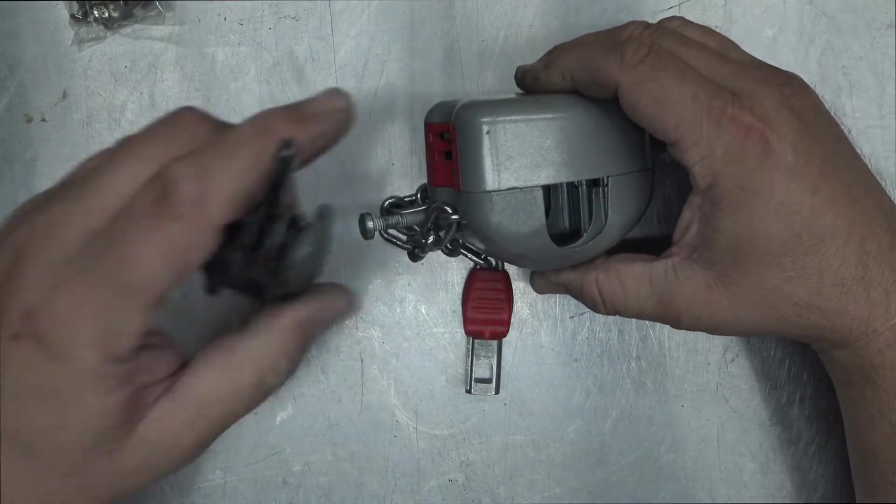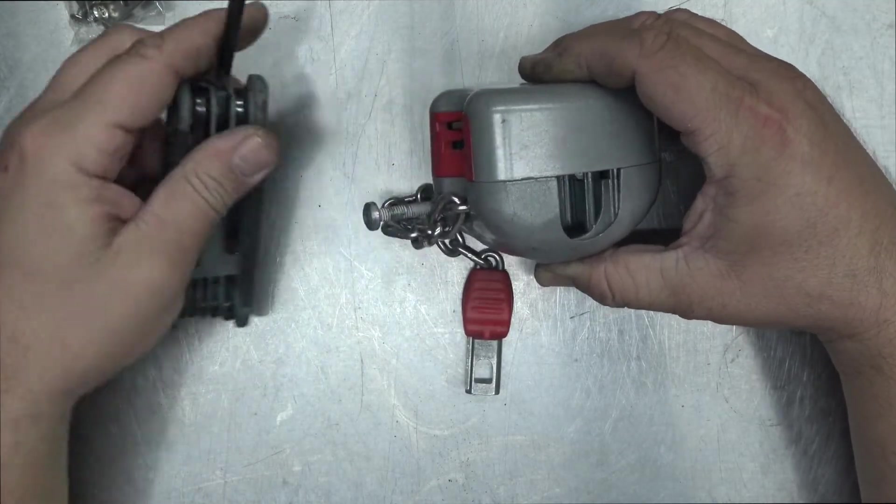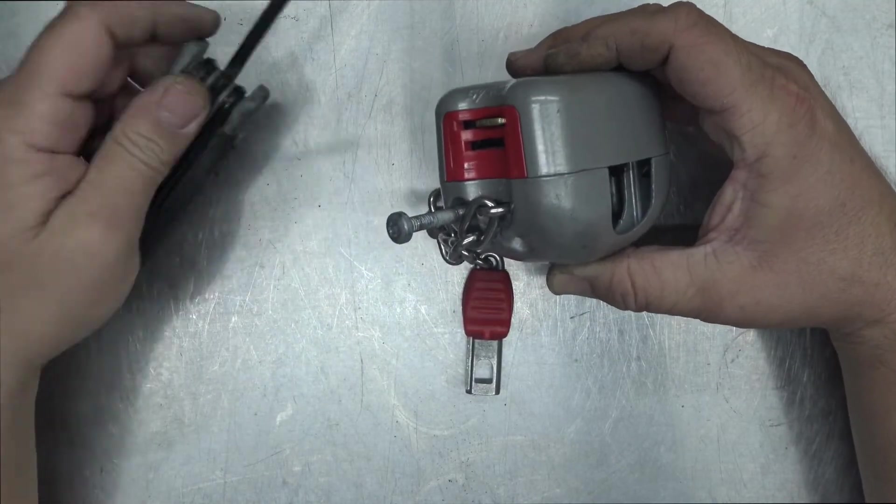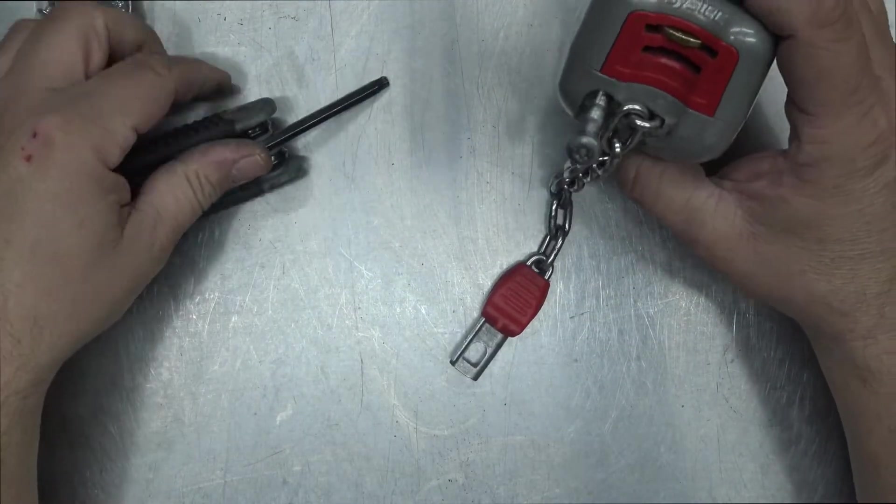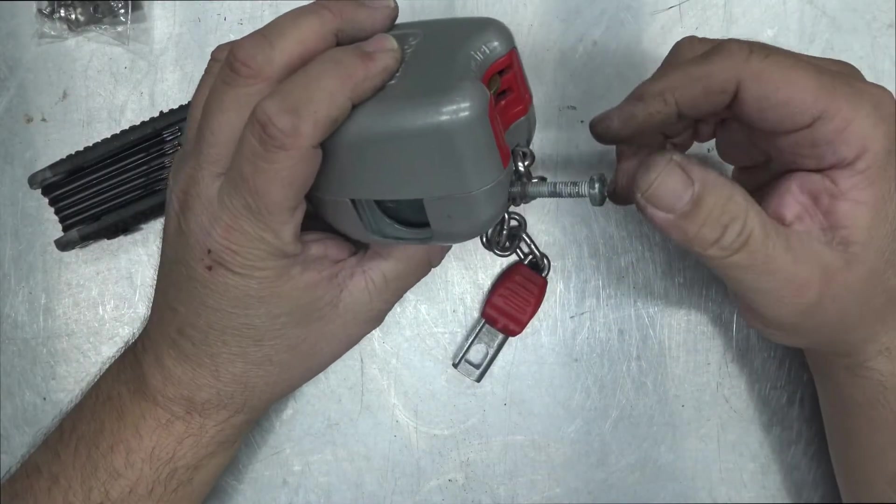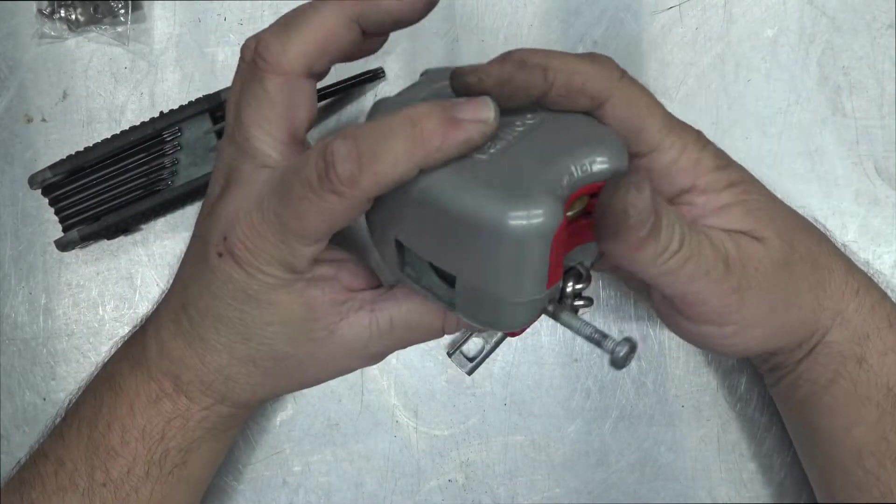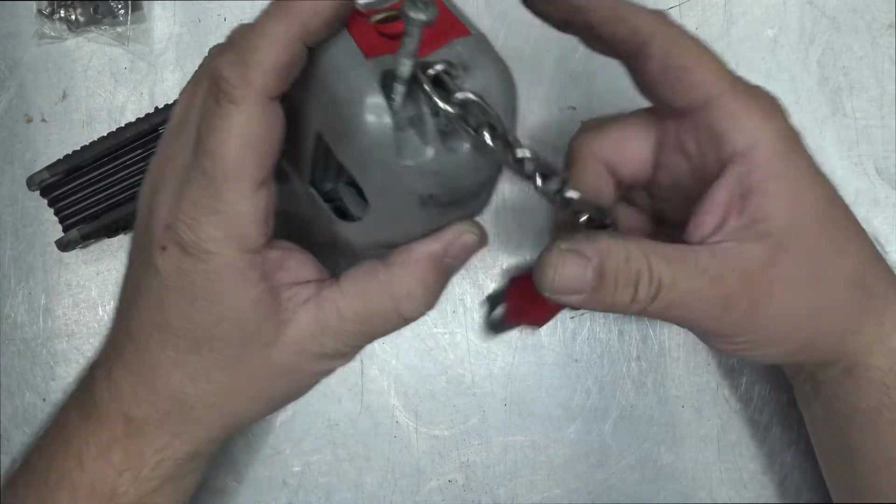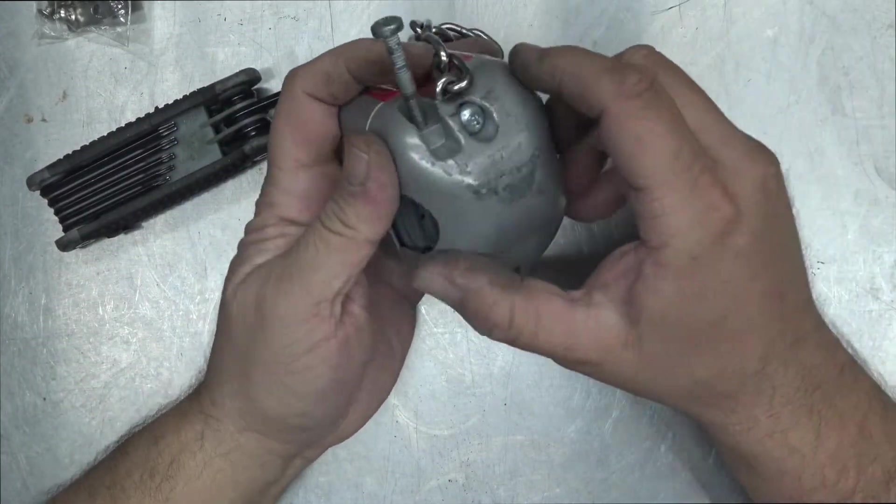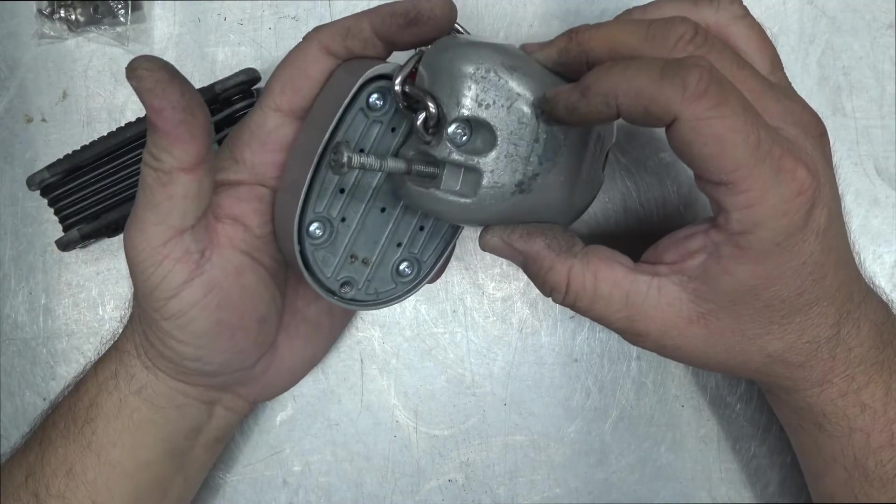Luckily I had some of these torx screws in my toolbox, and it actually happened to be the right one. So I was able to undo it and remove it and the trolley's going in the bin. This screw here stops the actual lock from rotating around. Once that one's off, then you've got two screws on the bottom and then you can access it.